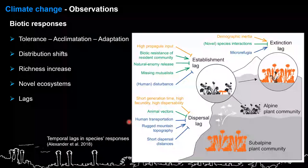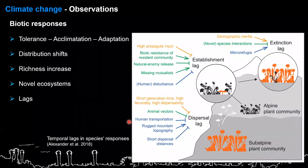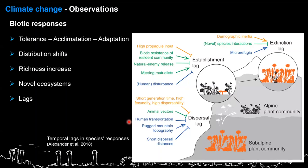Something extremely important for management is the lags. All of these responses occur, but they occur at different timescales. It's very important when you want to manage something to know how fast each of these responses are occurring, how they are overlapping, and how to quantify the lags - this allows you to anticipate future changes. There are three main lags to expect: first, a dispersal lag affecting species and community levels; then an establishment lag, where a species can appear somewhere but won't establish right away; and finally an extinction lag, which depends on tolerance, adaptation capacity, and the strength of biotic interactions in the community.